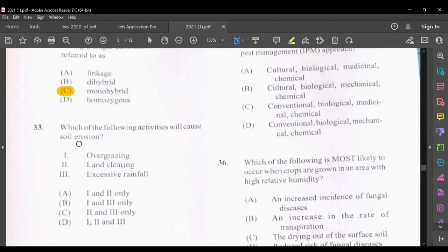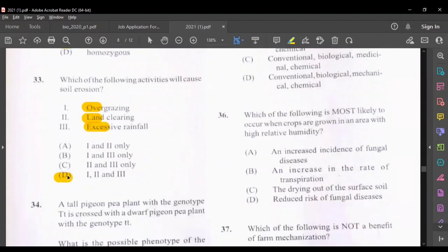Which of the following activities will cause soil erosion? Overgrazing, yes. Land clearing, yes. Excessive rainfall, all of these things can cause soil erosion, so the answer here would be D.